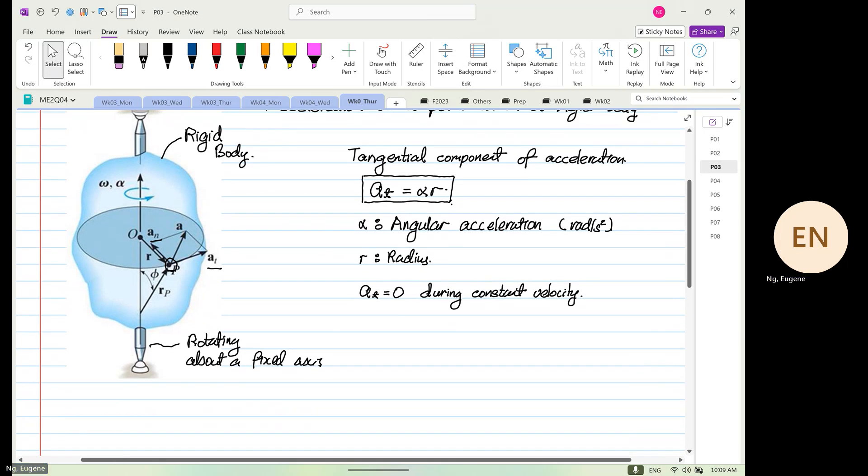Now, the normal component of acceleration is equal to a_n, omega squared r. We've seen this before, remember in vibration? When the motor spins, it has an acceleration, which is equal to what? Omega squared r.